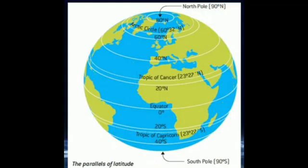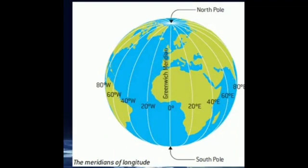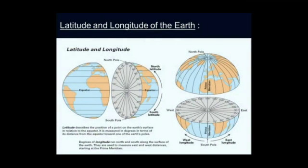Next we saw about latitude and longitude. Latitude refers to imaginary lines drawn horizontally, and longitude refers to imaginary lines drawn vertically. The main significance of both latitude and longitude is to find out locations clearly.